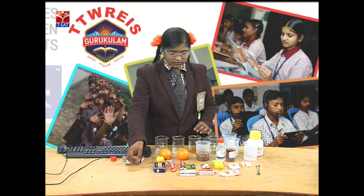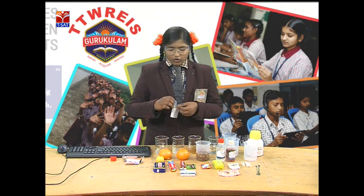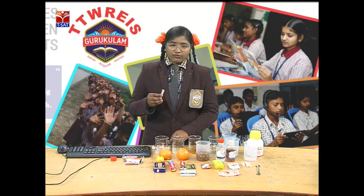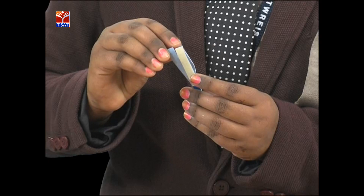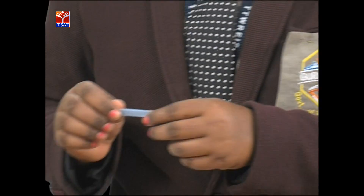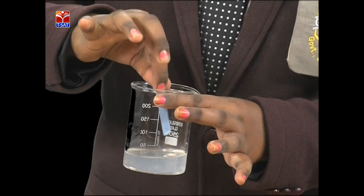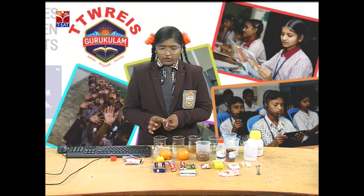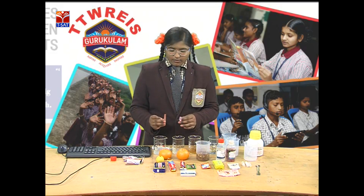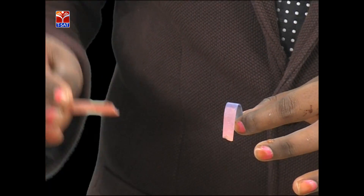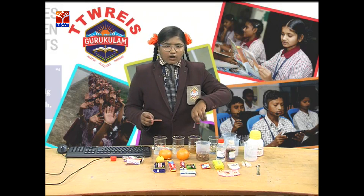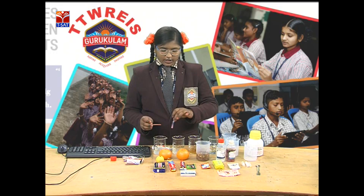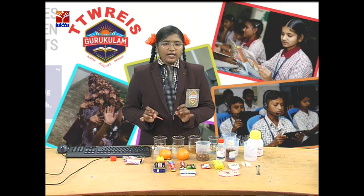And now, with the blue litmus paper. Take the blue litmus paper — we have blue litmus papers like this. Take one blue litmus paper and dip it into the same lemon solution. Before dipping the blue litmus paper in the lemon solution there is no change, and after dipping there is a change observed. This means the lemon solution is acidic in nature.